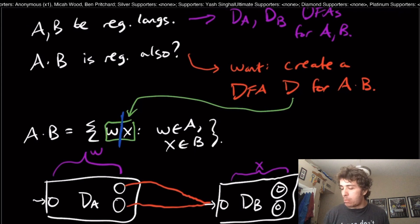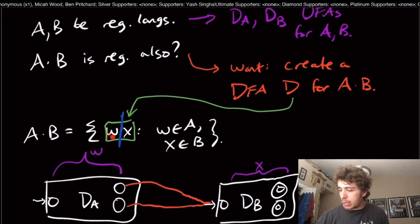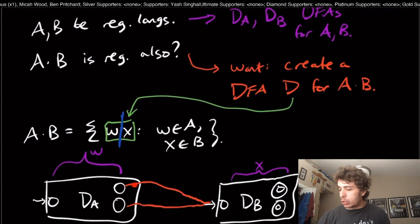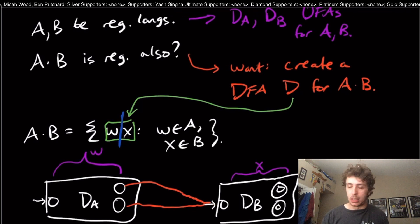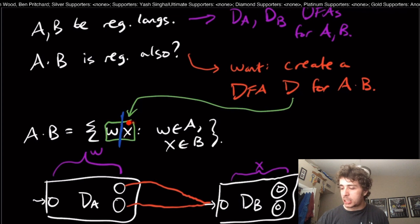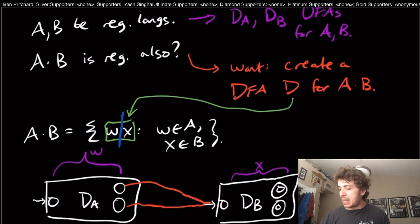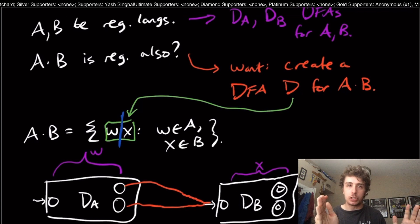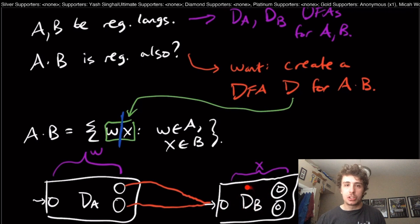But even more importantly, even if that wasn't an issue, notice that there's no separator here between the w and the x part. In order to take a transition in a DFA, I must consume a character. But if I consume the first character of this x part right here, then this DFA D_B isn't really reading the x string; it's reading the x string minus the first character. So it won't actually accept the same strings that it normally would have because it's starting one character later.